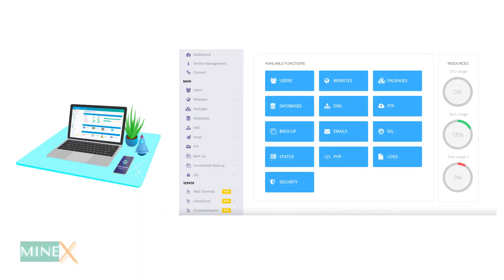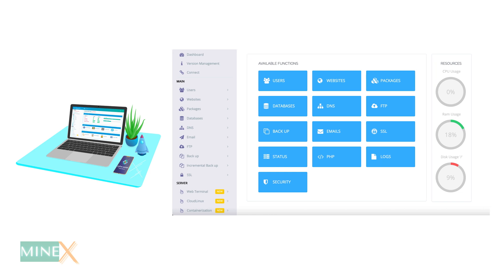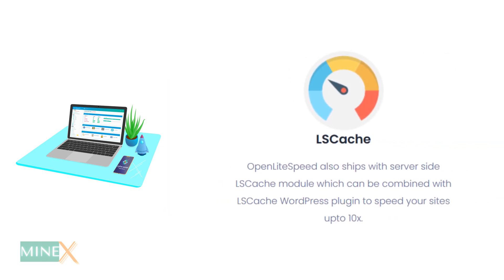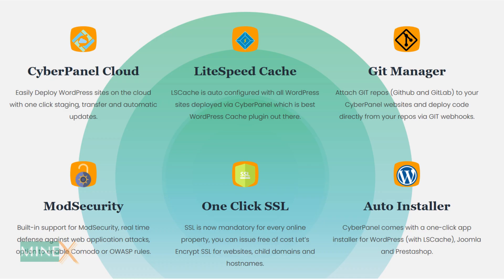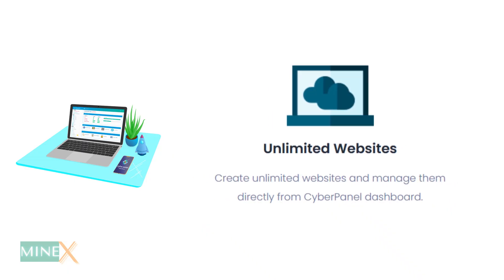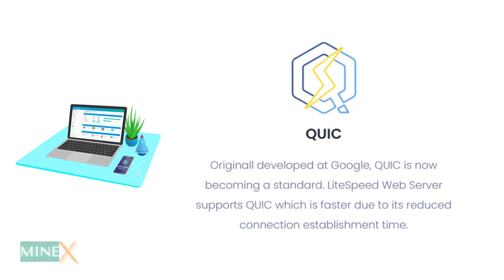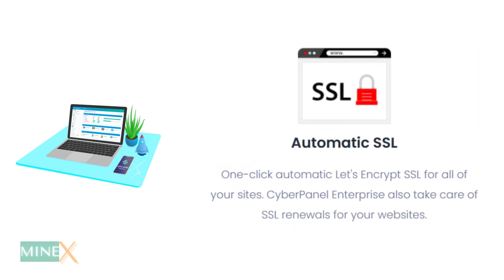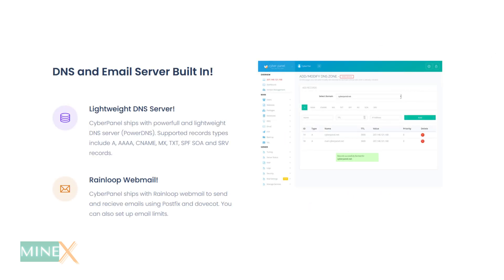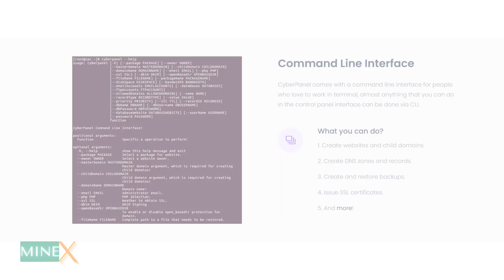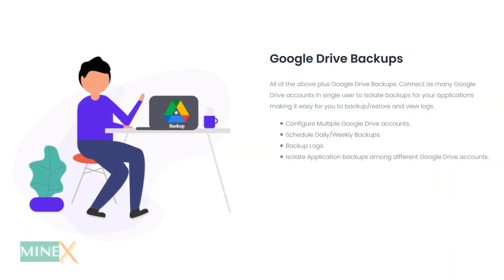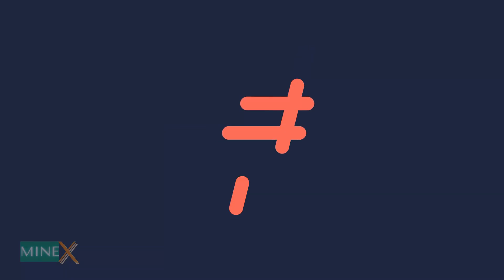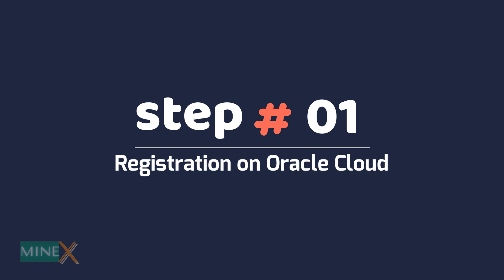CyberPanel is a web hosting panel that is easy to use with a more user-friendly interface, like cPanel. CyberPanel comes with OpenLiteSpeed, which makes your Apache WordPress site up to 10 times faster than a normal server. There are many additional features to consider: unlimited website hosting on one panel, LiteSpeed free caching, QUIC transfer protocol, one-click automatic Let's Encrypt SSL, multiple PHP versions, built-in DNS and SMTP email servers, web-based command line interface, Google Drive backup system, and much more.